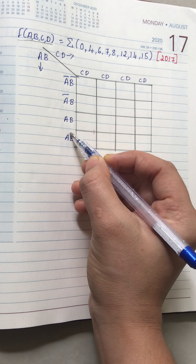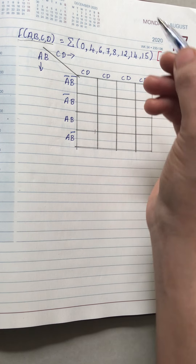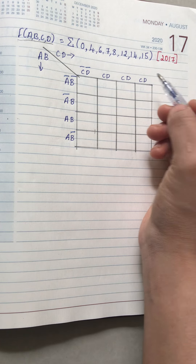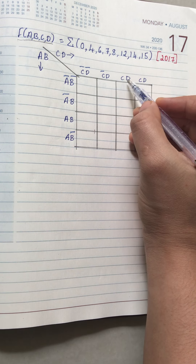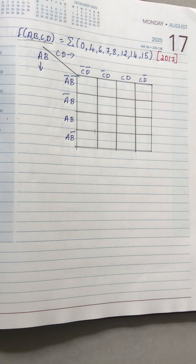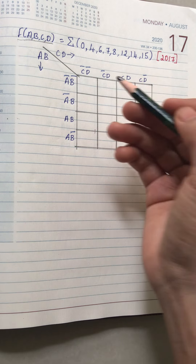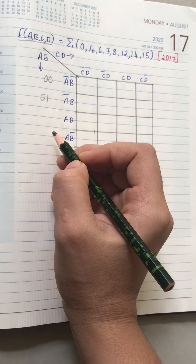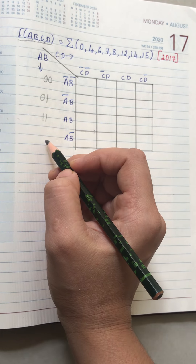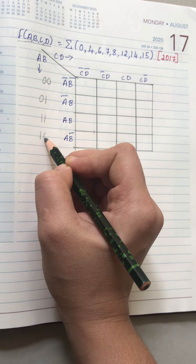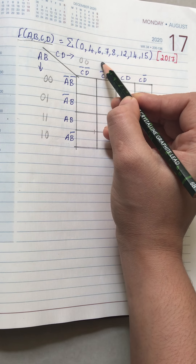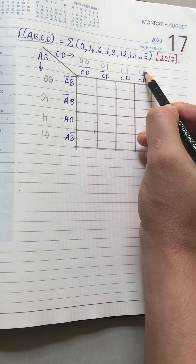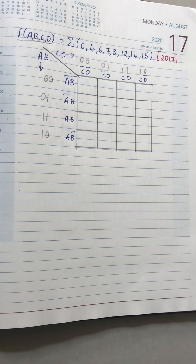Next it is a b-bar. In the same way the columns also: first it is c-bar d-bar, next is c-bar d, next is c d, and next is c d-bar. Wherever bar is there that is 0, wherever bar is not there that is 1. So a-bar b-bar means 0 0, a-bar b means 0 1, a b means 1 1, a b-bar means 1 0. In the same way for columns: 0 0, 0 1, 1 1, 1 0. This is the labeling of the K-map variables.